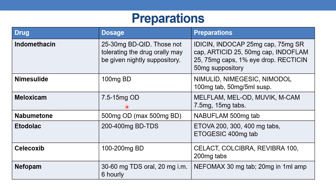The next drug is meloxicam. The dose is 7.5–15 mg once daily. Marketed preparations include Mobiox available in 7.5 and 15 mg tablets. The next drug is nabumetone. The dose is 500 mg once daily, with a maximum dose of 500 mg twice daily. The marketed preparation is Nemuflame in 500 mg tablet. The next drug is etodolac. The dose is 200–400 mg twice or thrice a day. Marketed preparations are Etova in 200, 300, and 400 mg tablets, and Etologesic in 400 mg tablet.